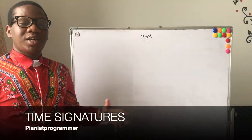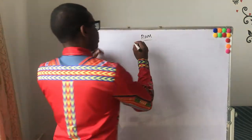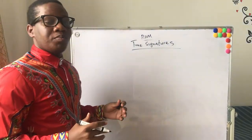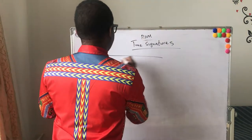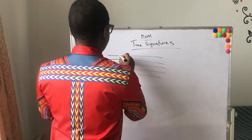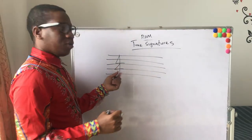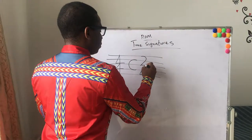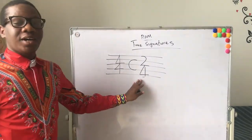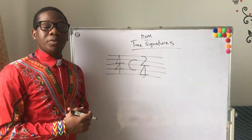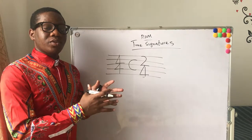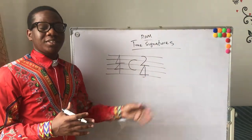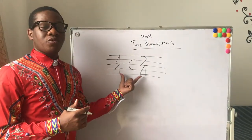Today's topic is about time signatures. Have you picked up a piece of music and you saw something like this, or you saw something like this, or something like this? These are time signatures. When you pick up a piece of music, the first thing you see is the clef, the next thing is the key signature — we've talked about this extensively in our previous videos — and after that is the time signature.